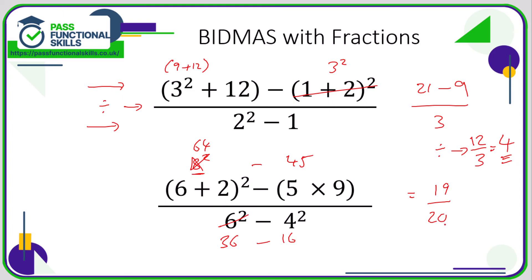Our answer is 19 over 20. As the number on the top is less than the number on the bottom, this is a value less than one, so it's fine to leave it as 19 twentieths — unless the question asks you to turn it into a decimal, in which case 19 divided by 20 would be the calculation.